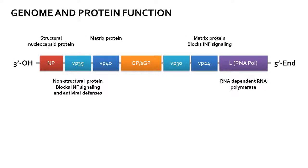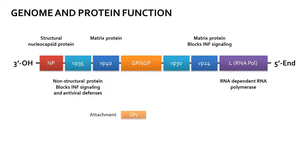The genome encodes structural and non-structural proteins VP24 and VP35 that down-regulate interferon signaling and provide immune evasion strategies, a matrix protein VP40, and several splice variants of the glycoprotein including GP1, responsible for attachment.